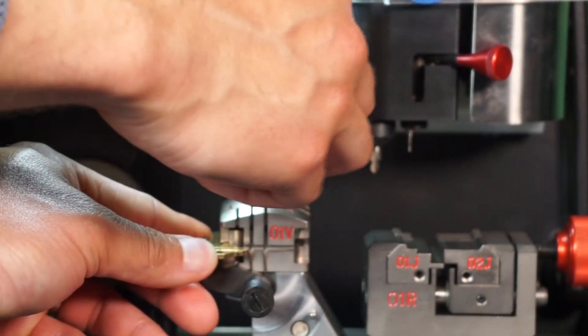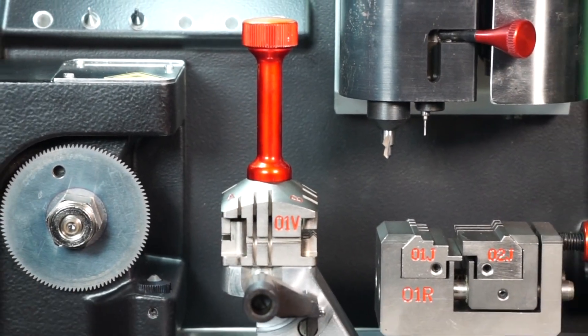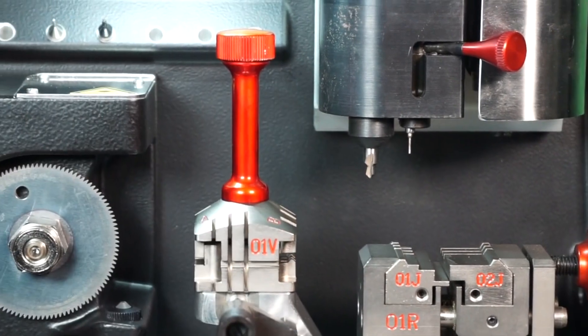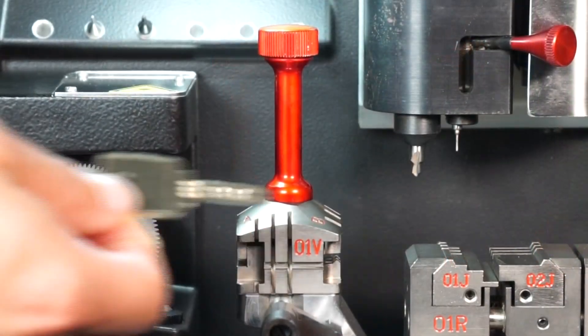The other main benefit of this machine is it has a second station for doing your high-security automotive keys, such as these keys here. It also has the ability to do dimple style keys, such as this Gemini key.